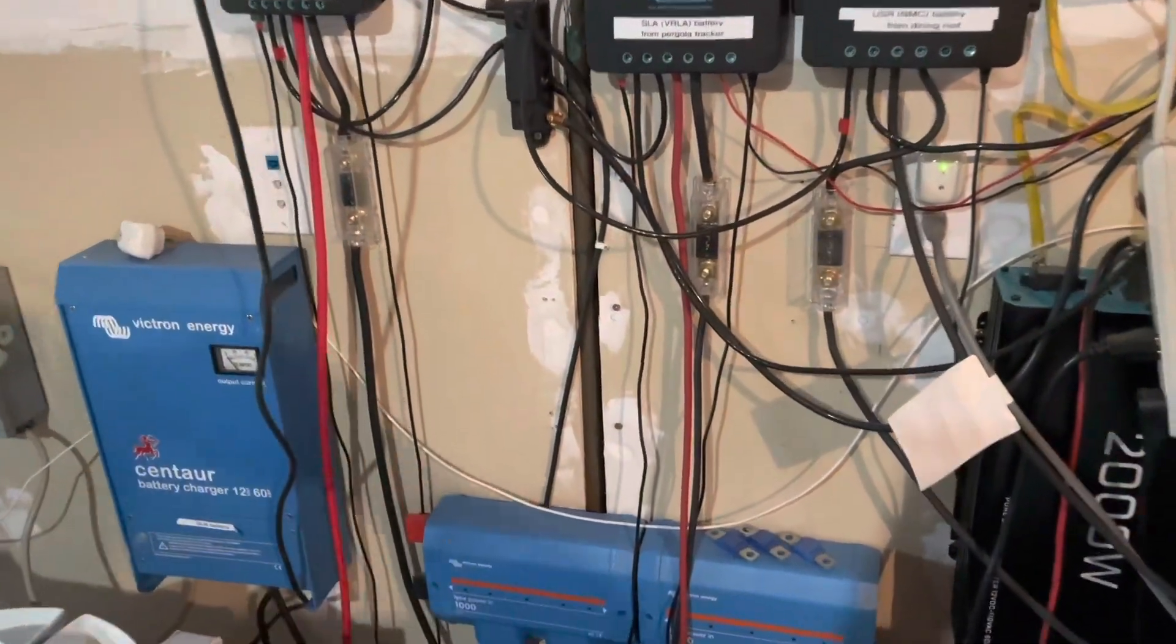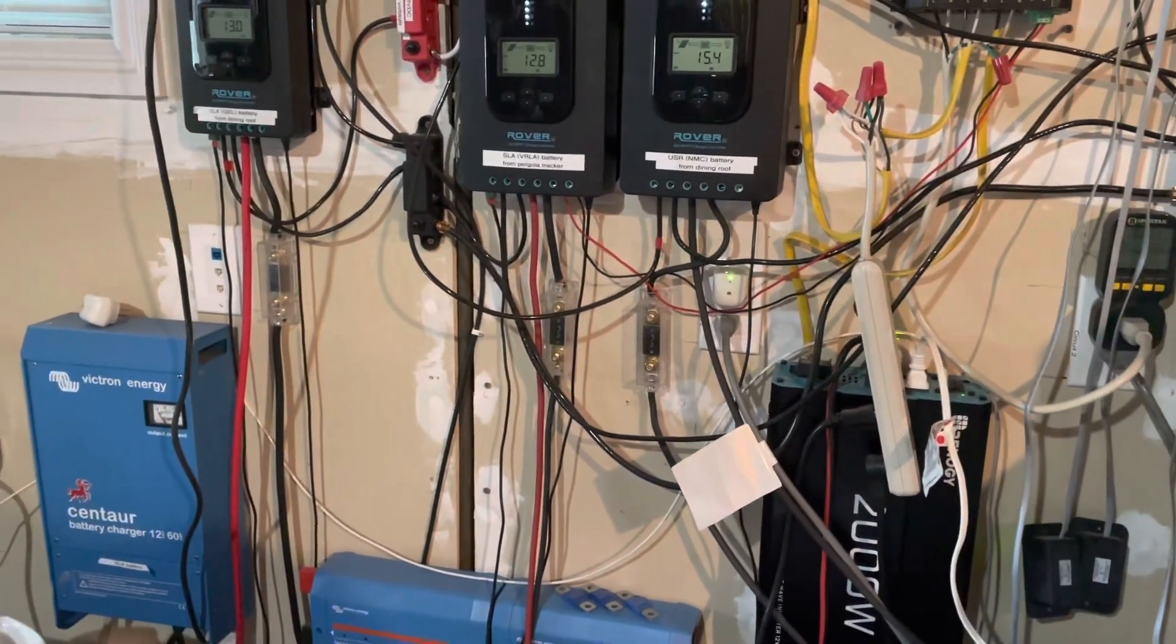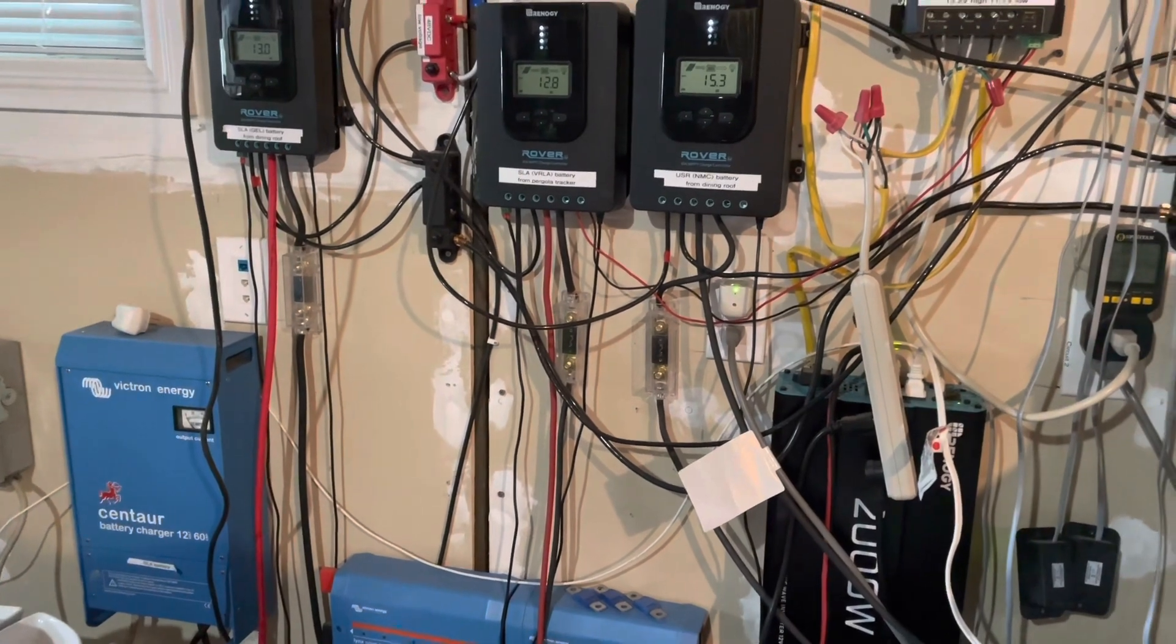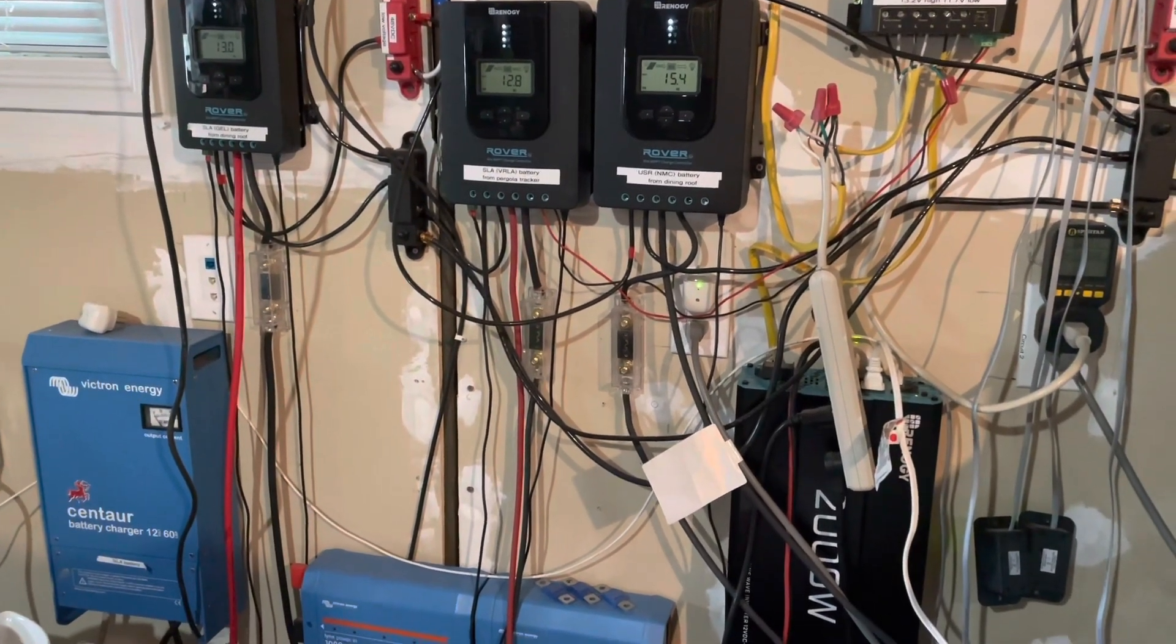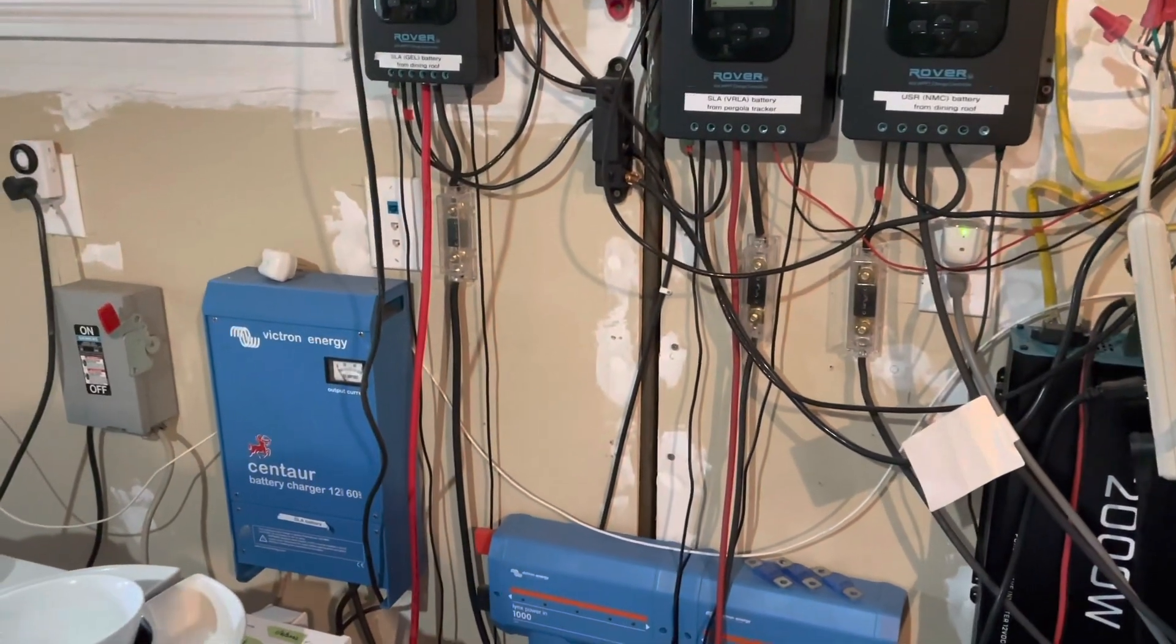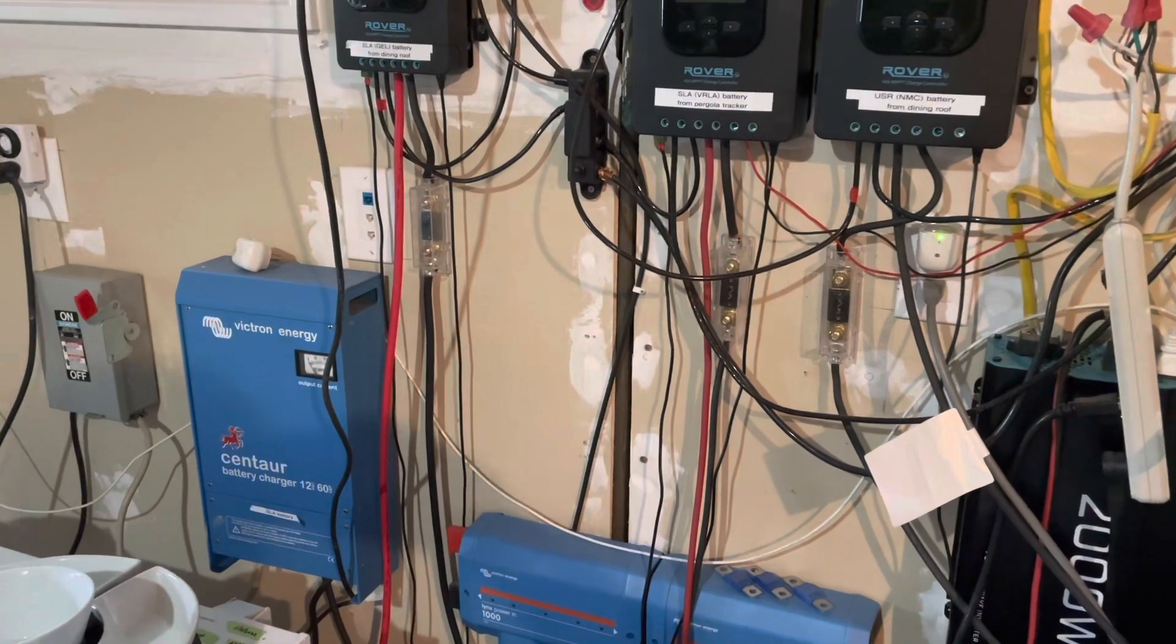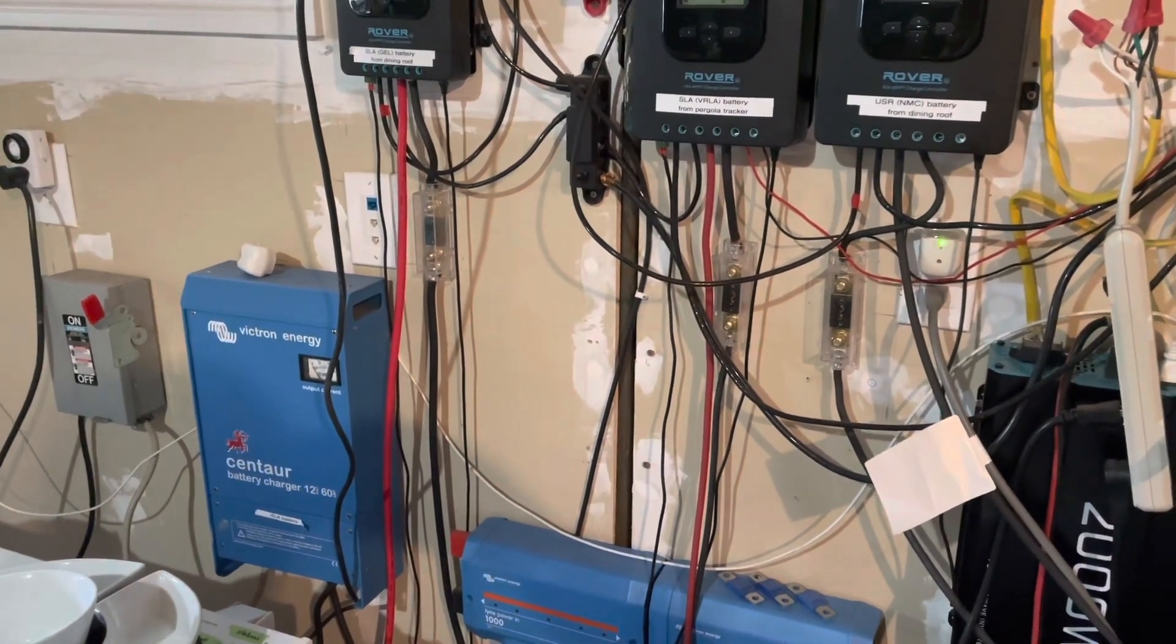Now how I compensate for this is I have a large lead-acid battery array that I jump to when my lithium ions run low. That's kind of like my last stage backup. The idea is that this should never run out. And if the grid is up, I top this up in case I didn't collect enough charge from the solar.